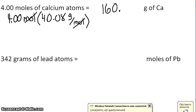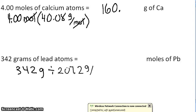Now you have your grams, so you go 342 grams and you want to divide it this time. So divide it by 207.2 grams per mole.